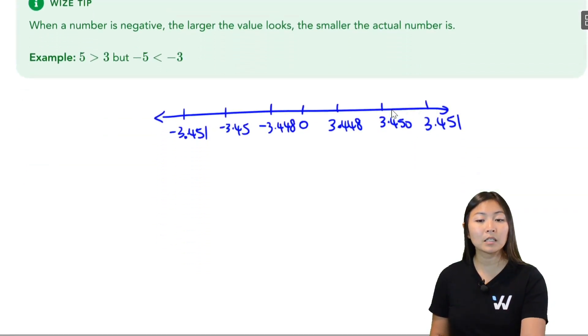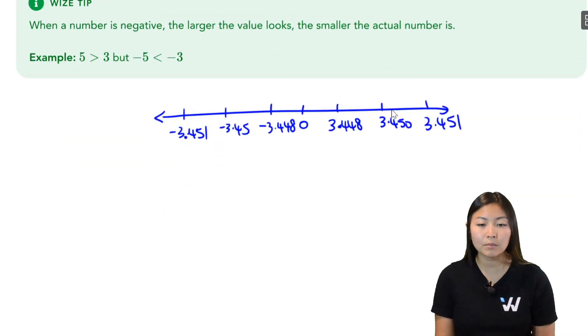So there you go. That's my list of numbers in order. If you were asked to use the greater than or less than symbol, you would just put symbols, the less than symbols all the way through so that this guy is the smallest, this guy is the largest.